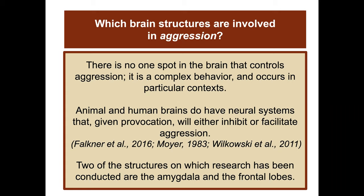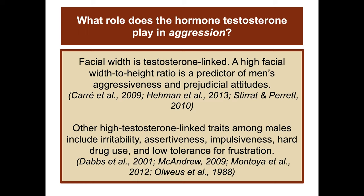Two structures on which research has been conducted are the amygdala and the frontal lobes. Regarding the hormone testosterone: facial width is testosterone-linked, and a high facial width-to-height ratio is a predictor of men's aggressiveness and prejudicial attitudes. Other high testosterone-linked traits among males include irritability, assertiveness, impulsiveness, hard drug use, and low tolerance for frustration.